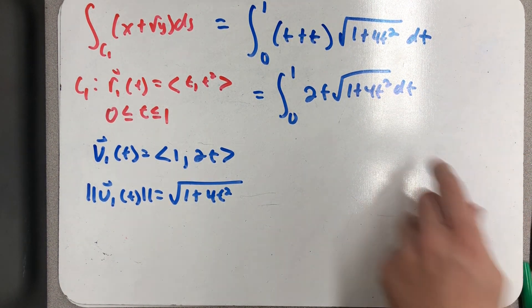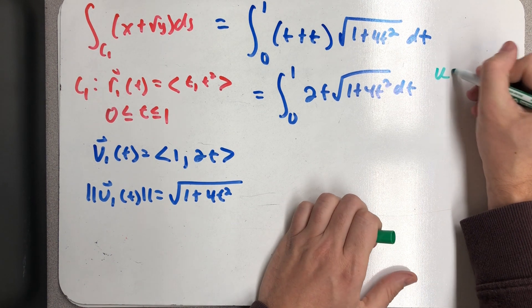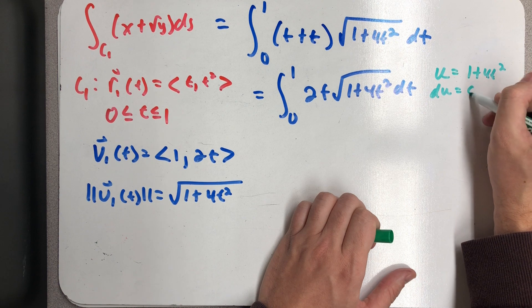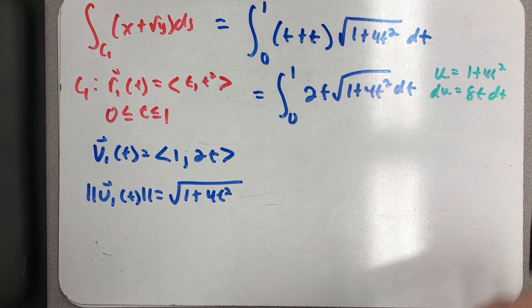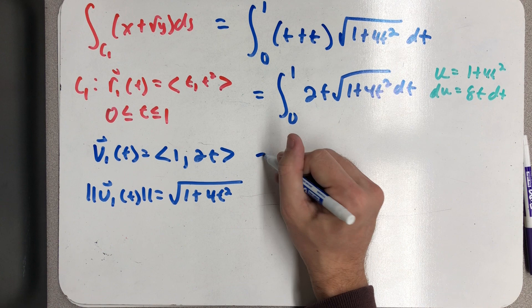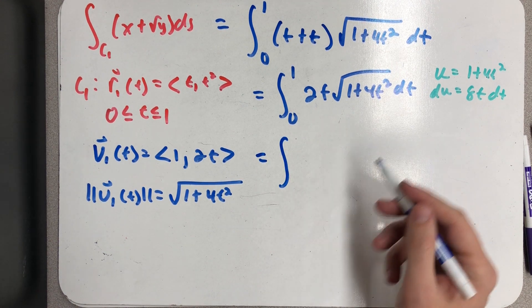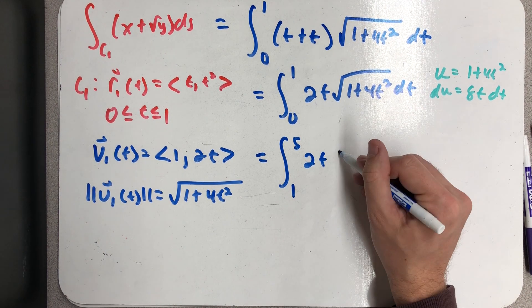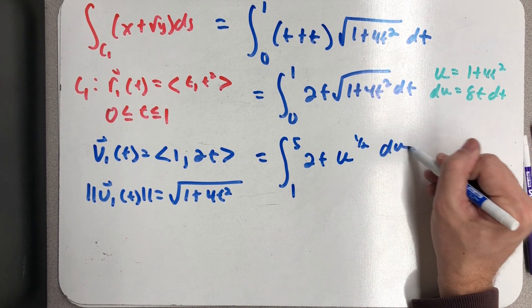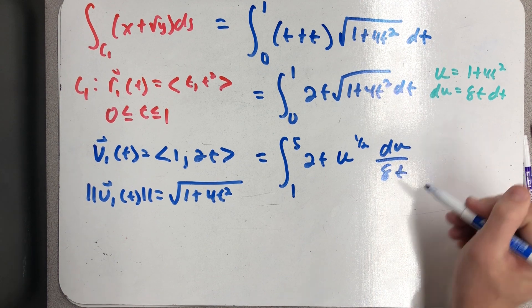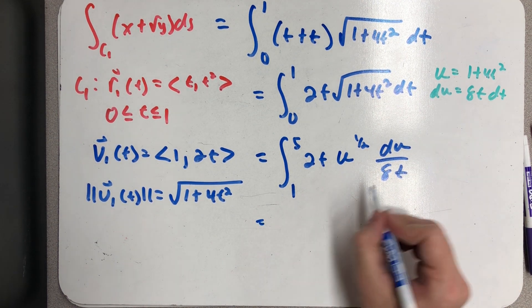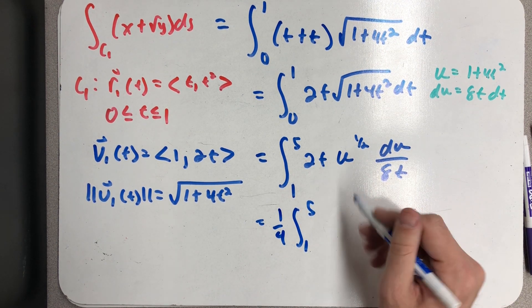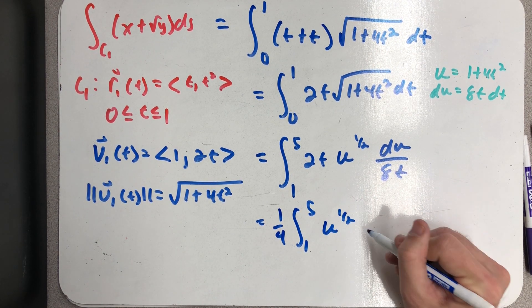So u could be 1 + 4t², making du = 8t dt. Taking advantage of my substitution, my bounds become one and five. I have a 2t on here very briefly, a u to the one half, and then du would come over an 8t. So I end up with a 2/8 or 1/4 to write out front.